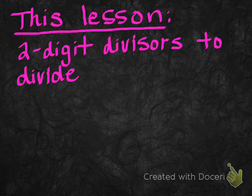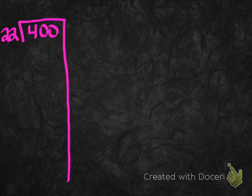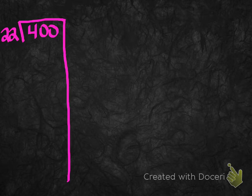So in this lesson we're going to do two digit divisors to divide, just like I stated earlier. And we're going to set this problem up just like we did before with our one digit divisors, except of course we have two digit divisors. And this is a different problem. So 400 divided by 22.